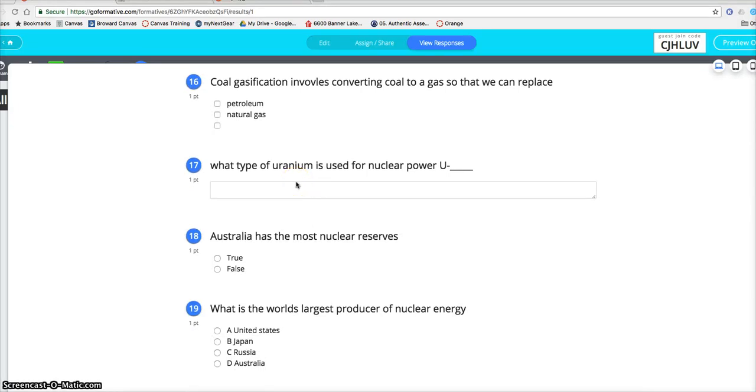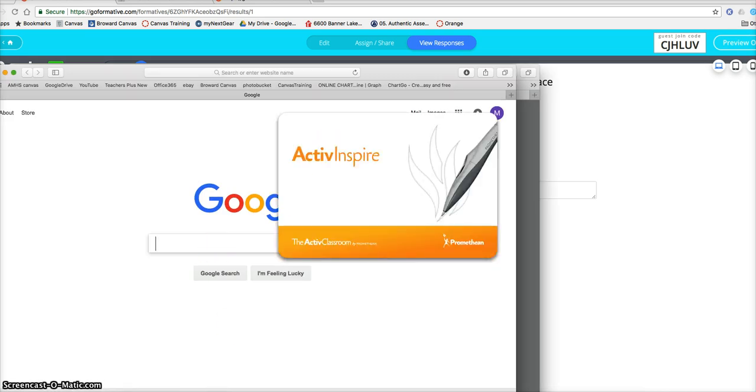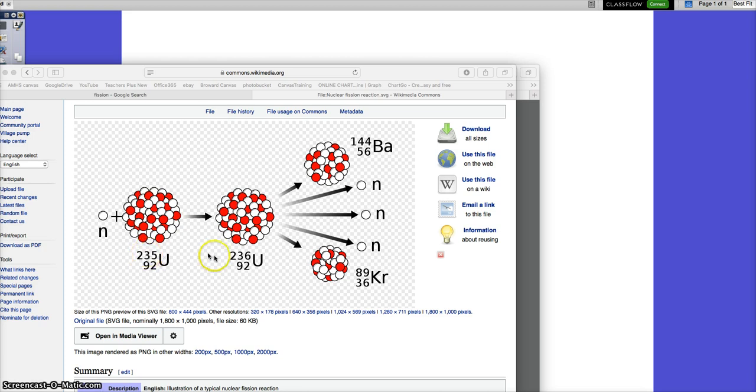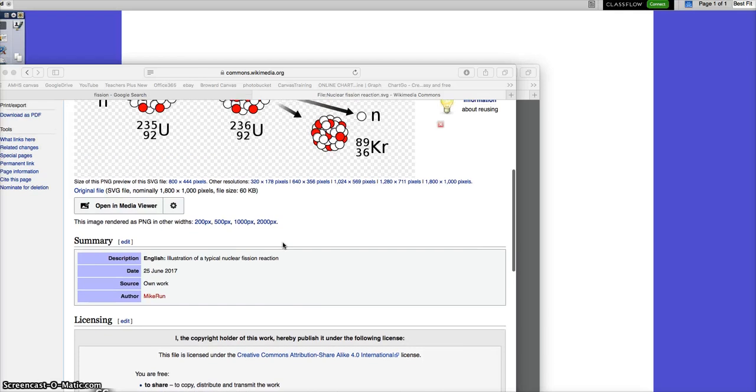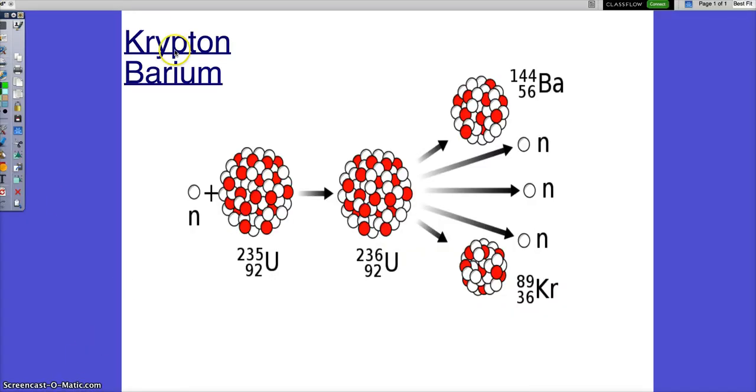So uranium for nuclear power is U-235. And I want to show you something that I haven't shown you before. When fission splits, and nobody's ever had to know this, but these two compounds, I mean atoms, came up once on the AP exam. So when a neutron, this is a neutron, hits U-235, you always said two daughter U-235 form, right? More neutrons, and what's here being released? Heat. But really what's being formed is krypton and barium, which are really the daughters.